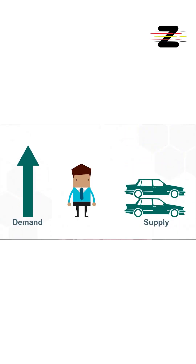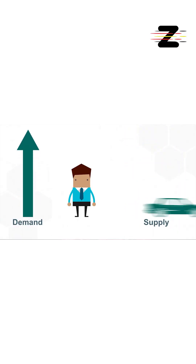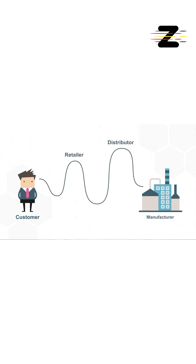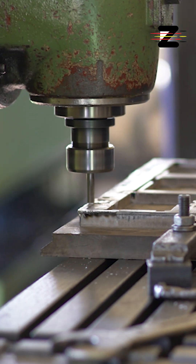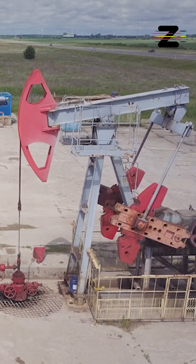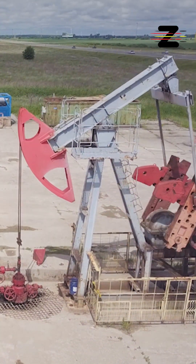For example, if a store notices more people buying a product, they might order more of it from their supplier. Then the supplier sees more orders and assumes that demand is growing, so they order even more from the manufacturer. The manufacturer then increases their production and orders more raw materials from their suppliers.